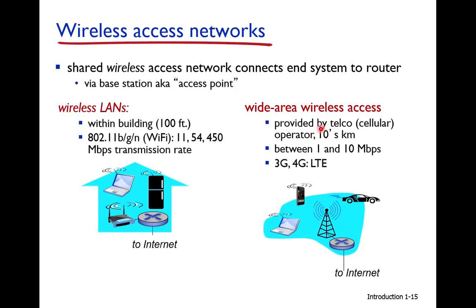Wide area wireless access uses cellular networks such as 3G, 4G, and LTE for mobile phones. It supports data rates from 1 up to 10 Mbps and can cover distances of several kilometers. Users connect to base stations, which are interconnected and connected to the internet.